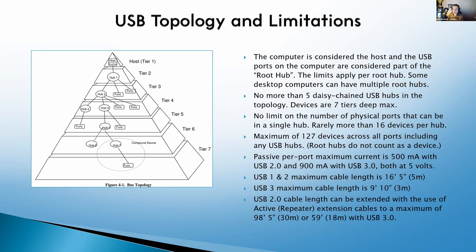While there's no limit on the number of physical ports in a single hub, I've rarely seen more than 16 devices on a hub. We can have a maximum of 127 devices across all ports everywhere, although root hubs do not count as a device. Some desktop computers have multiple root hubs, and adding a USB 3.0 adapter card would add its own root hubs too — so in theory 127 devices per root hub. The per-port maximum current is 500 mA with USB 2.0 and 900 mA with USB 3.0, both at 5 volts. You can get around this by using an active USB hub instead of a passive one.